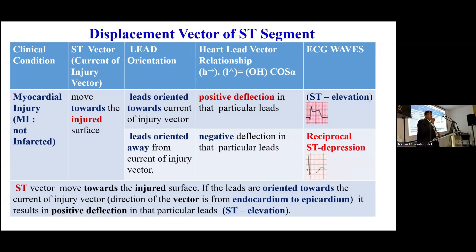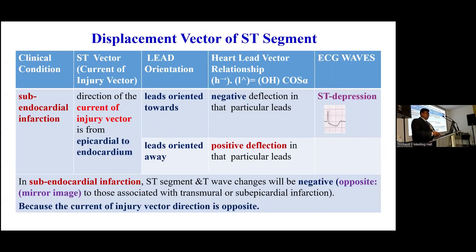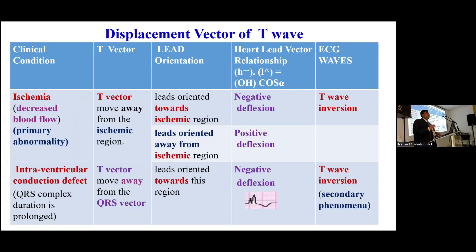Normally the ventricles are activated from endocardium to epicardium — transverse activation. In myocardial injury (not yet infarction), the current of injury exists. In subendocardial infarction, which is the mirror image opposite to transmural epicardial infarction, the direction of current of injury is opposite, from epicardial to endocardial. More blood is needed to repolarize than to depolarize, so whenever blood flow is decreased, the T wave is affected. In ischemia with decreased blood flow, the T wave will move away from the ischemic region. Leads oriented towards the ischemic region will cause negative deflection — T wave inversion. In intraventricular conduction defect, QRS duration is prolonged, and the T vector moves away from the QRS vector, also resulting in negative deflection but as a secondary phenomenon.